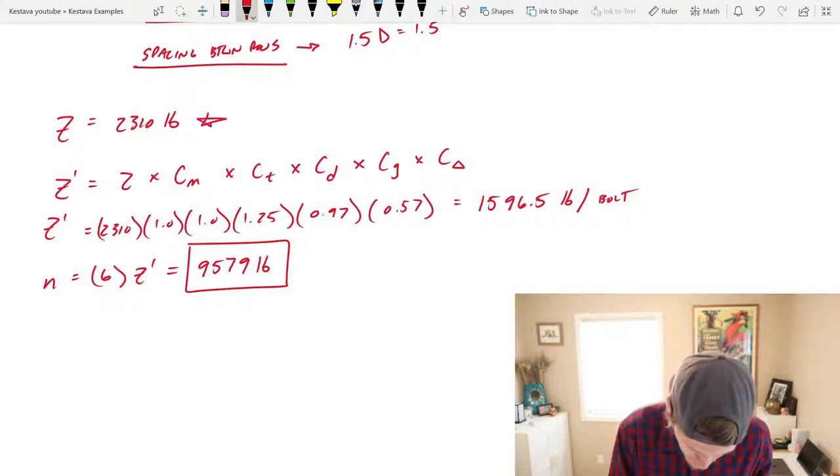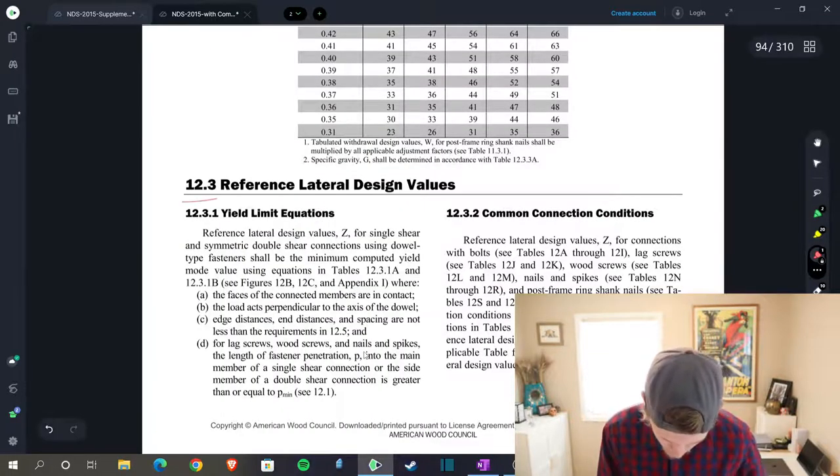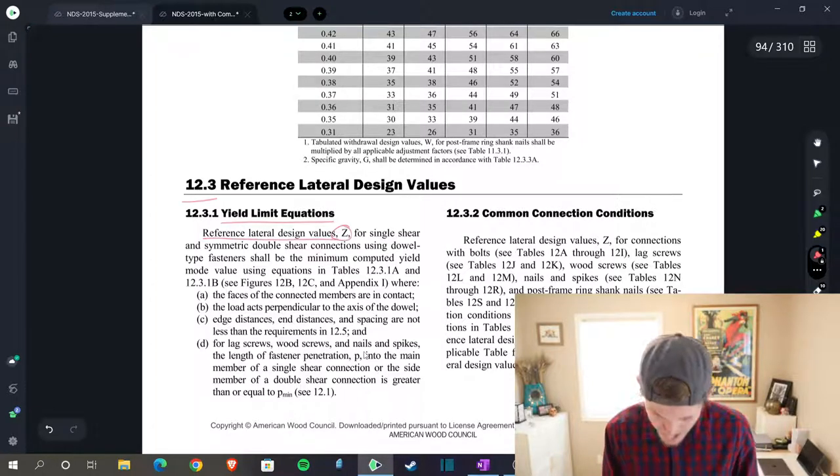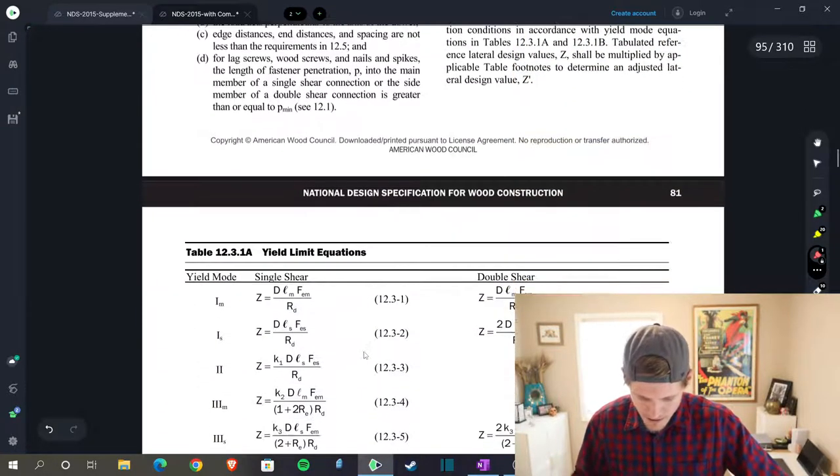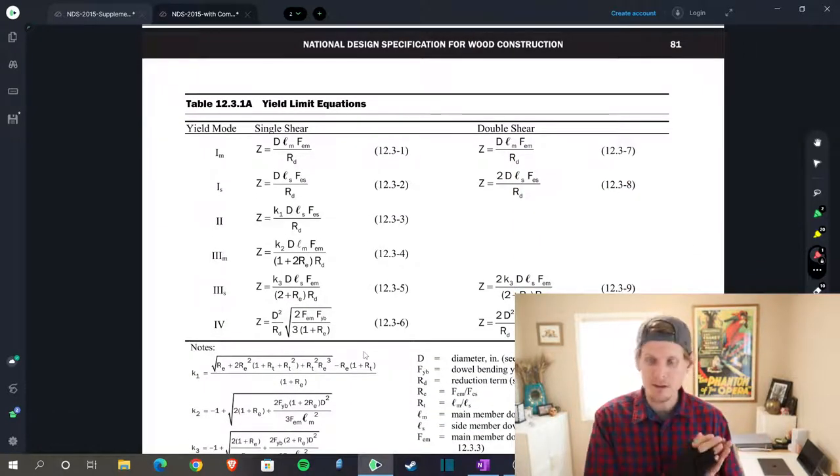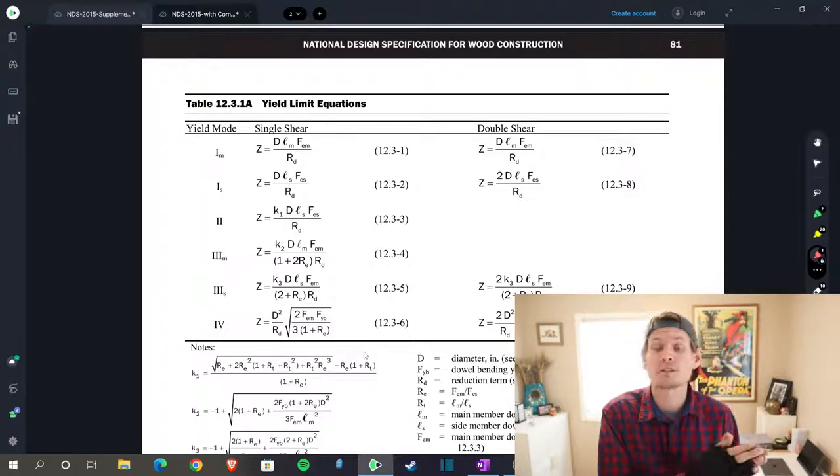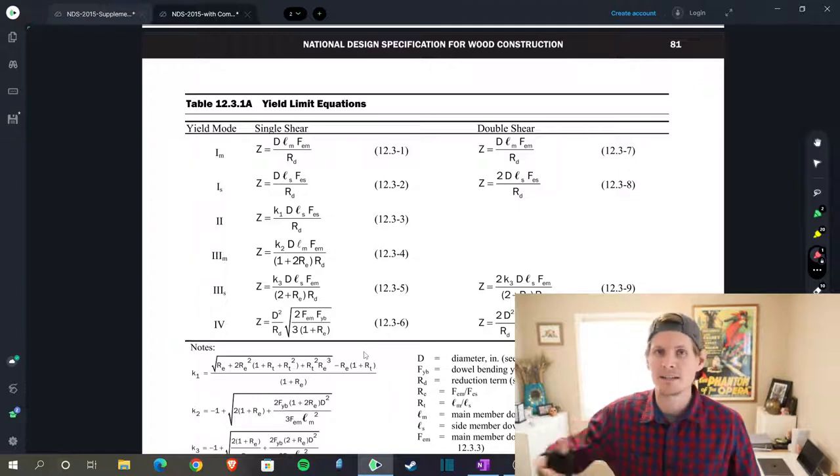Now something quick I want to point out is this z value that we found from the tables. If you look back in the NDS, you will see in section 12.3, I'm talking about yield limit equations. This is for reference lateral design values z, and if you look further into what they talk about, you actually have several yield limit equations that determine the capacity of your bolted connection for determining z.